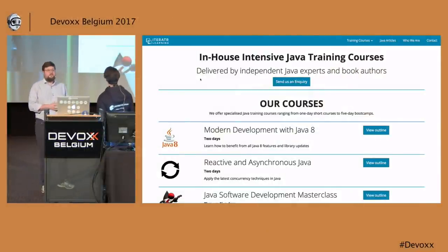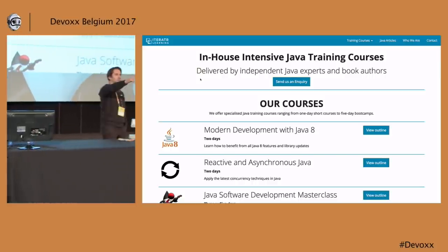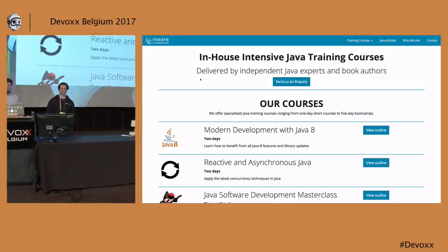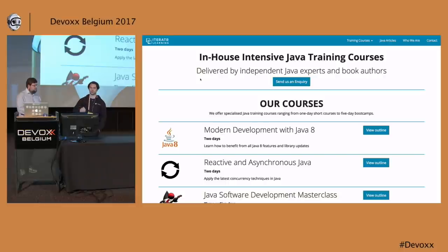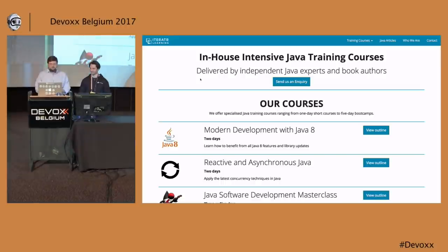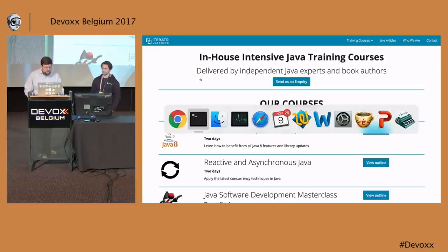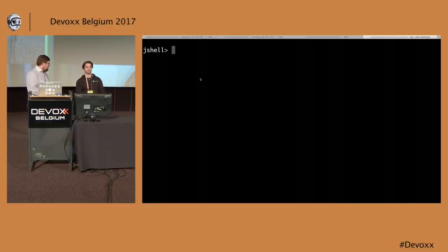Hello, how's it going? My name is Richard and I'm Raoul, and together we run iteratorlearning.com, which is a training company. We run training courses around core Java topics. We're here to deliver a talk about Java 9 core library changes — polishing the diamond — and we're also going to use another Java 9 feature to demo those library changes, which is the REPL, JShell.